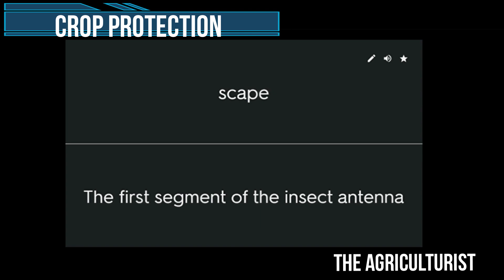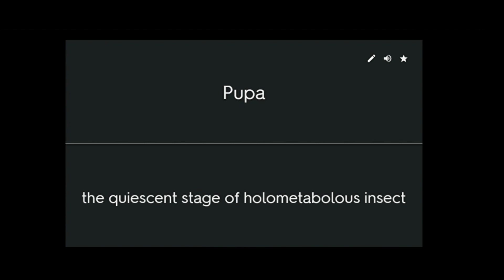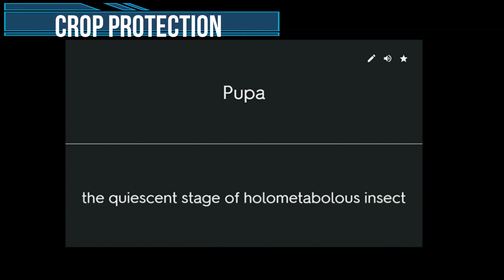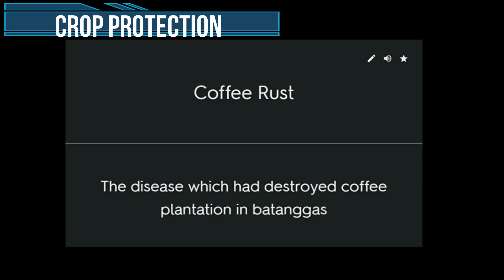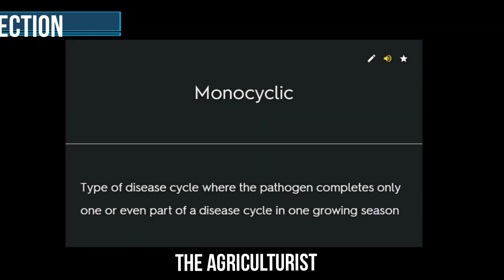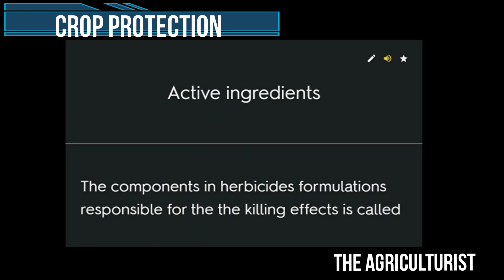The first segment of the insect antenna: round and hollow stem, leaves arise in alternate manner, fibrous root system. Grasses are characterized by the following: pupa, the quiescent stage of holometabolic insects. Mollusca — the golden snail is under the phylum. Coffee rust, the disease which had destroyed coffee plantations in Batangas, is a monocyclic type of disease cycle where the pathogen completes only one or even part of a disease cycle in one growing season.